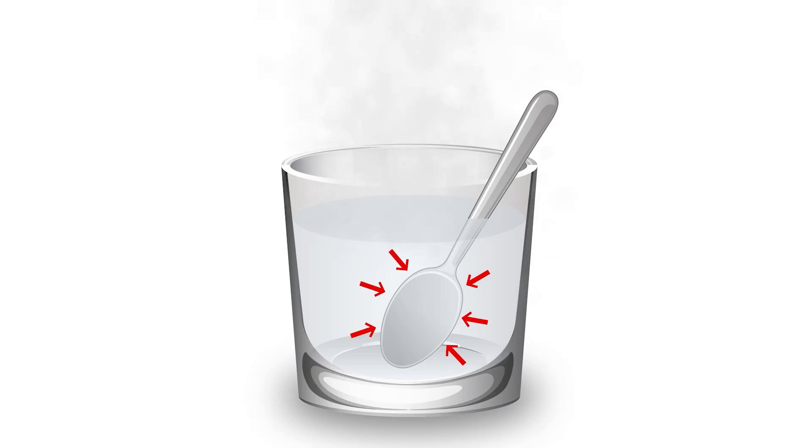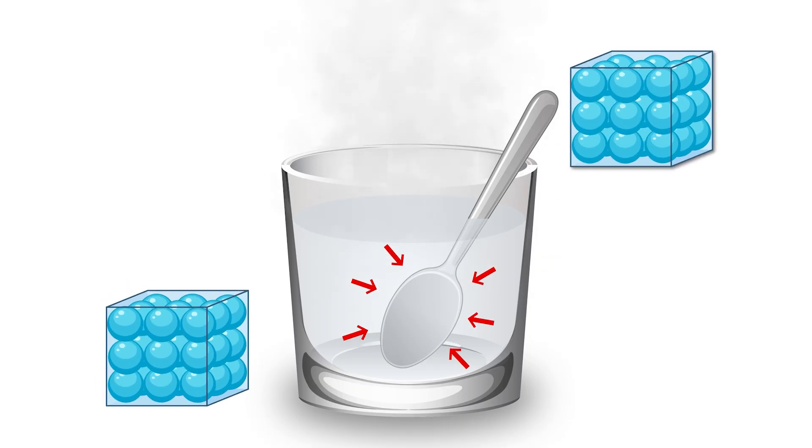But another form of conduction is happening at the same time. Heat also travels along the spoon itself. The warmer particles at the bottom of the spoon bump into the particles next to them, passing on some of their energy. Those particles then bump into the next ones, and it keeps going, like a chain reaction.